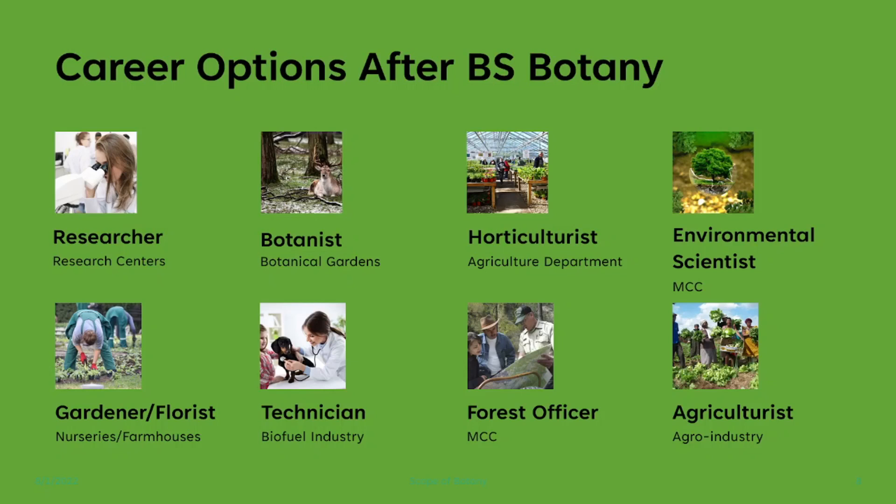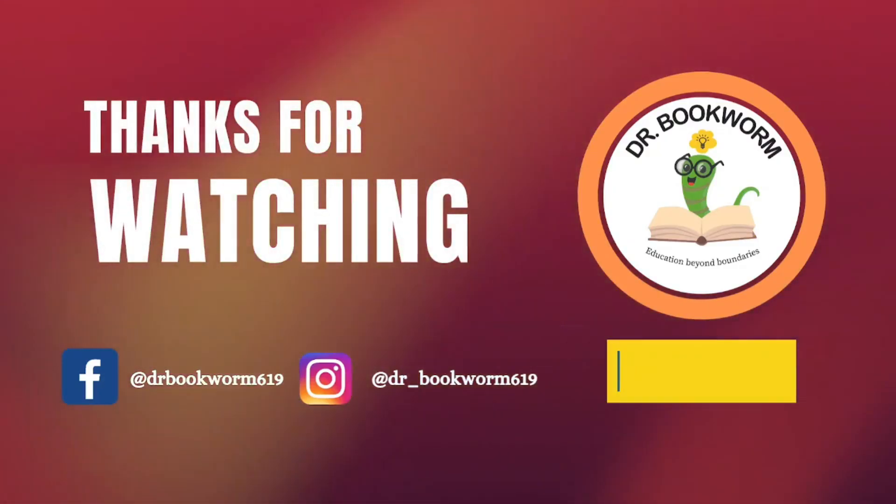Additional career options include working as a gardener or florist in the private sector, particularly in nurseries or farmhouses where plant care experts are required. You can work as a technician in the biofuel industry, which focuses on generating bioenergy from agricultural resources such as plants. You can apply for the position of forest officer or agricultural officer — the Ministry of Climate Change in Pakistan offers these positions annually. Finally, you can become an agriculturist targeting the agro-industry, as every industry dealing with agro products may hire you as an agriculturist if you have specialized in that field.